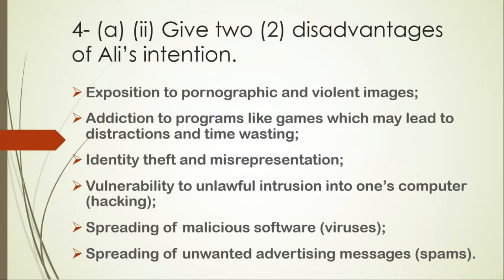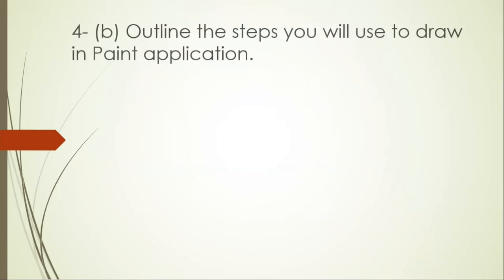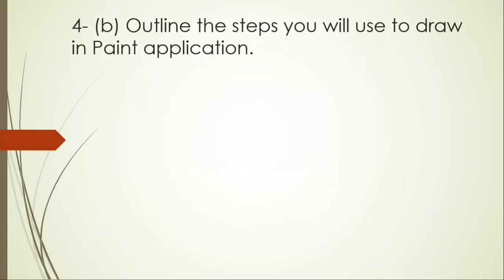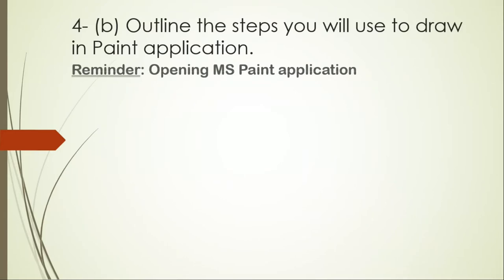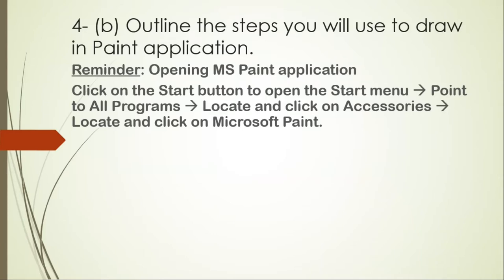Those are a few disadvantages of using the internet. Let's move on to question number four B: outline the steps you use to draw in the Paint application. As a quick reminder, to open Paint: click the Start button, point to All Programs, locate and click Accessories, then click Microsoft Paint.